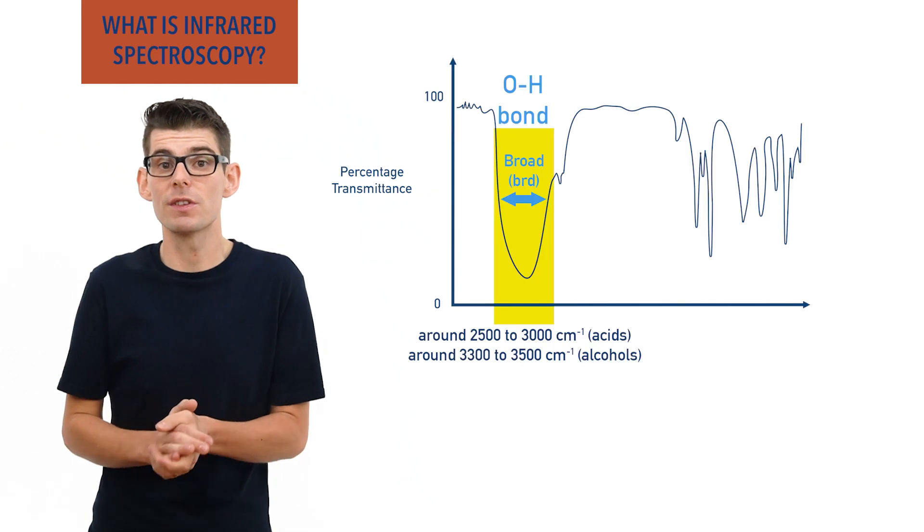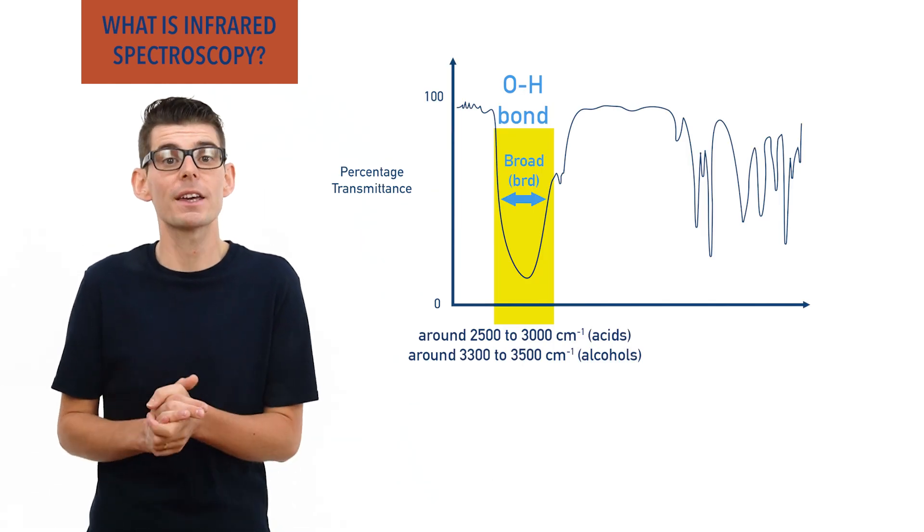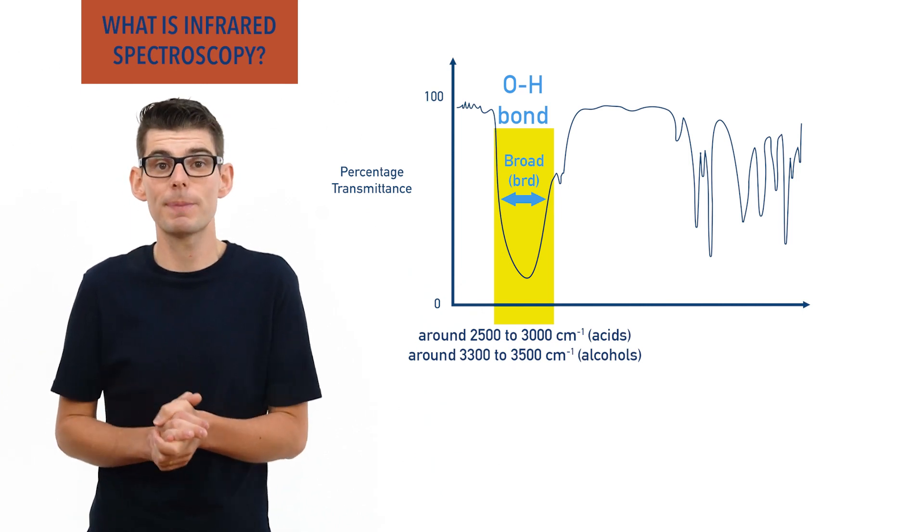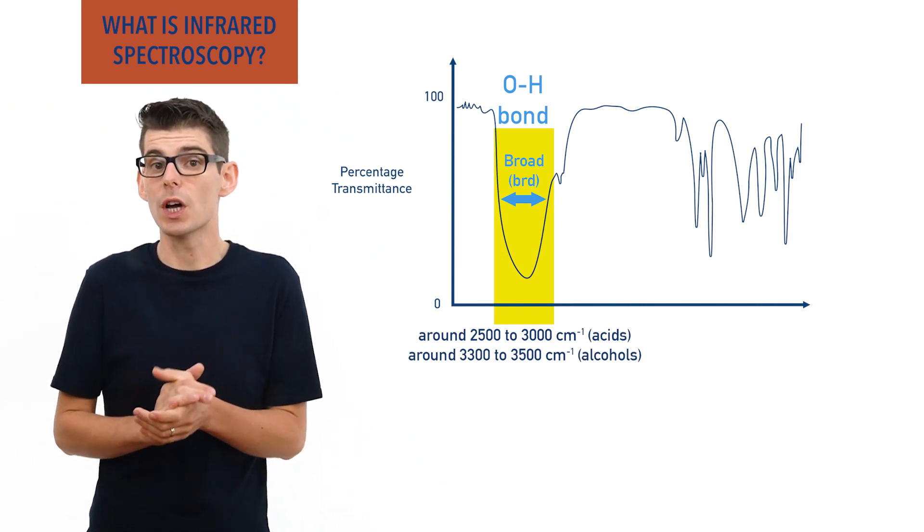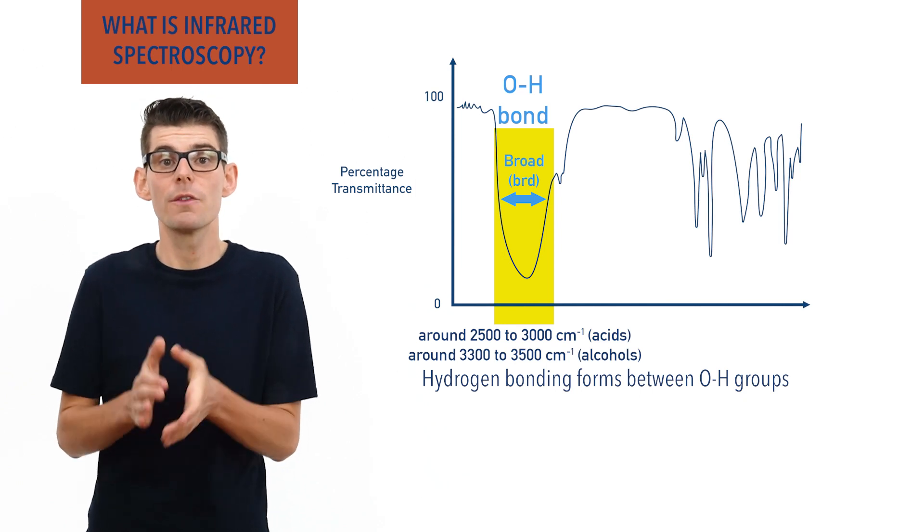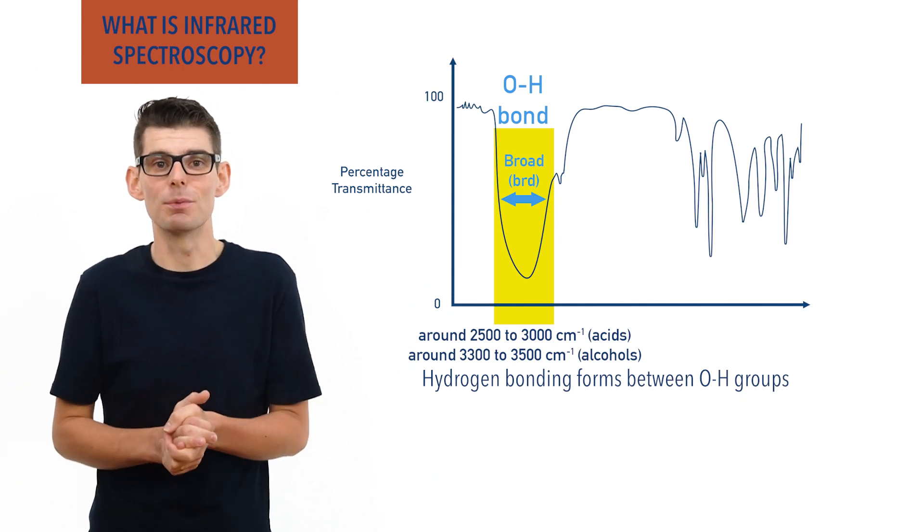OH bond stretches are described as broad and cover a wider range of wavenumbers on a spectra than you would otherwise expect. This is due to hydrogen bonding arising between oxygen and hydrogen atoms from different OH groups in neighboring molecules.